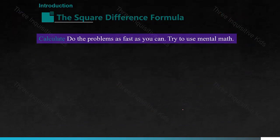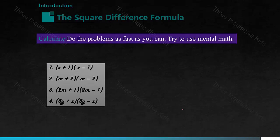To do the problems as fast as you can, try to use mental math. For the first problem, we have x plus 1 times x minus 1, which gives x squared minus 1 squared, equaling x squared minus 1. For the second problem, m plus 2 times m minus 2 gives m squared minus 2 squared, which equals m squared minus 4. For the third problem, we have 2m squared minus 1 squared, which equals 4m squared minus 1. For the fourth problem, 5y squared minus z squared equals 25y squared minus z squared. All these polynomials have something in common: both terms are the same except that one is a plus and one is a minus.